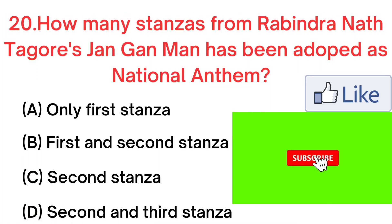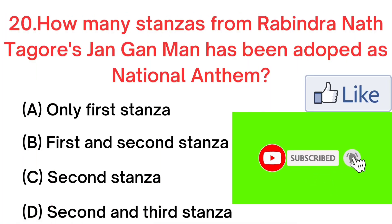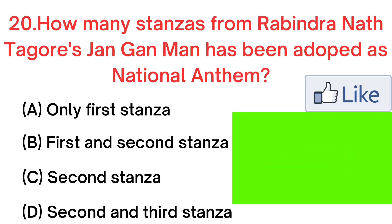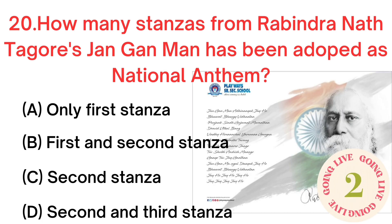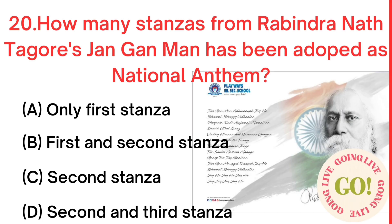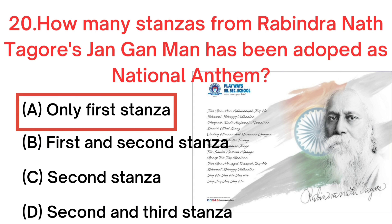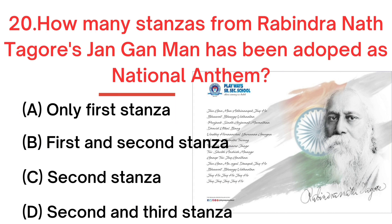Your next question. How many stanzas from Rabindranath Tagore's Jana Gana Mana have been adopted as the national anthem? A. Only first stanza. B. First and second stanza. C. Second stanza. D. Second and third stanza. Your answer is A. Only first stanza.